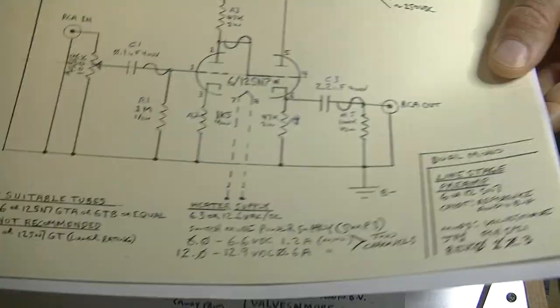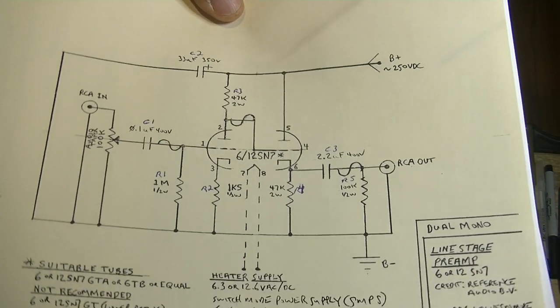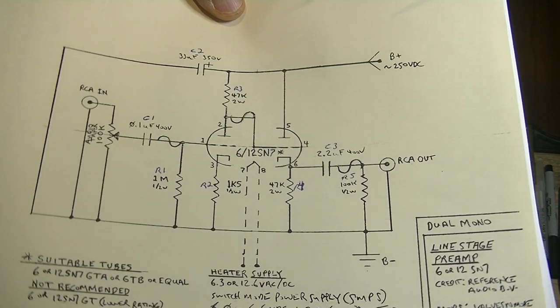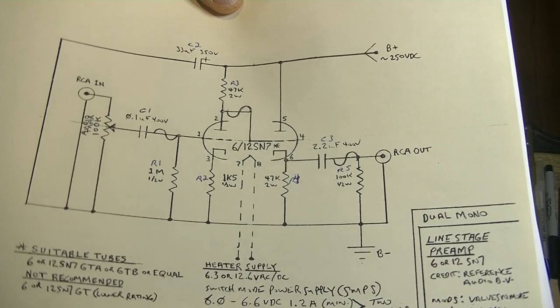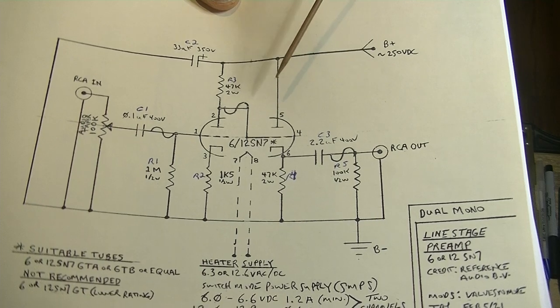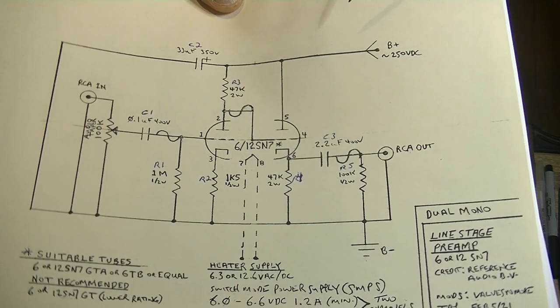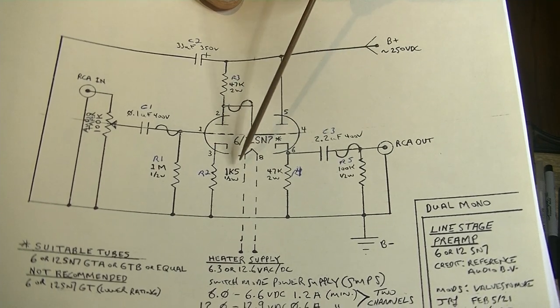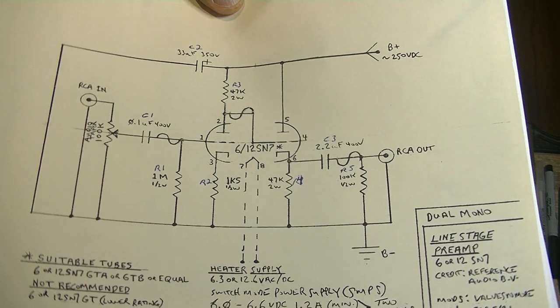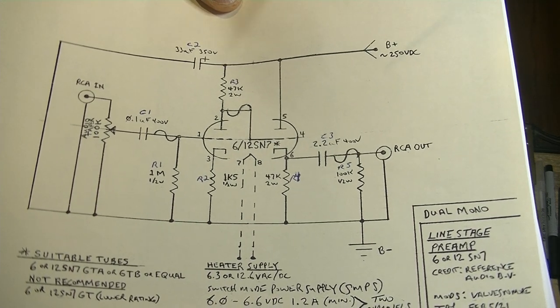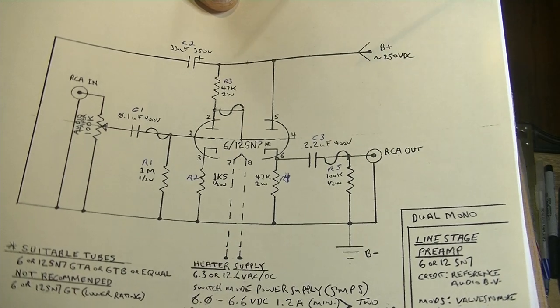Now, if you've been following my channel, you might say, Jim, that circuit looks a lot like your 6 or 12SN7 preamp. And it does. In fact, it's the first time that I used the direct coupling stage successfully. The difference is the cathode resistor changed a little bit in value, and the grounding of the circuit changed significantly.